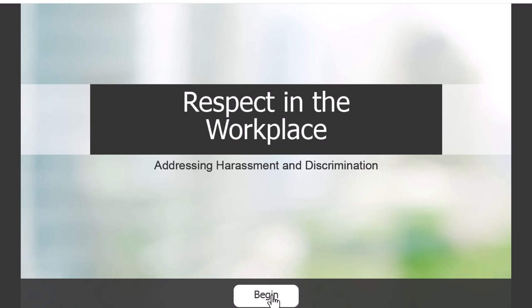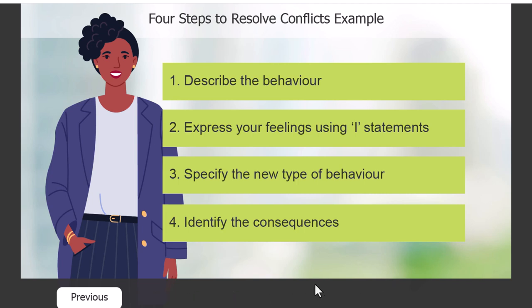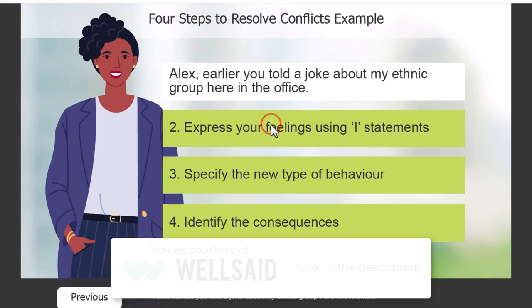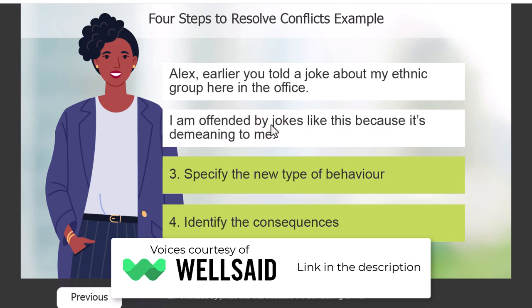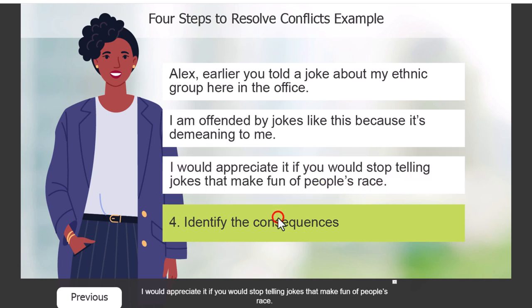We've arrived on the beginning slide. 'Here is an example of using the four steps to resolve workplace harassment or discrimination — click on each of the buttons to hear an example of each step.' We've got our closed captions right on slide number two. I'm testing the first button and immediately trying the second to see if I can jump before it finishes. 'Alex, earlier you told a joke about my ethnic group here in the office. I am offended by jokes like this because it's demeaning to me.' Only once the initial narration is complete am I able to press the second button.